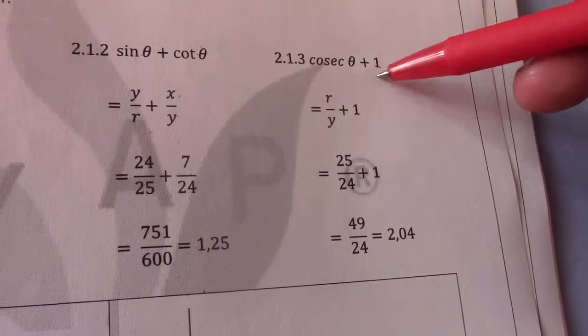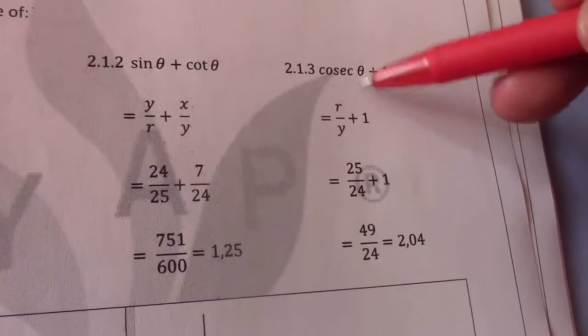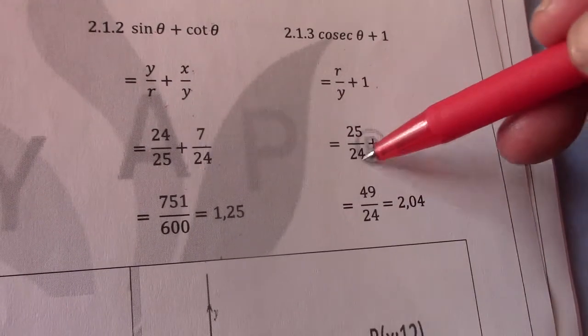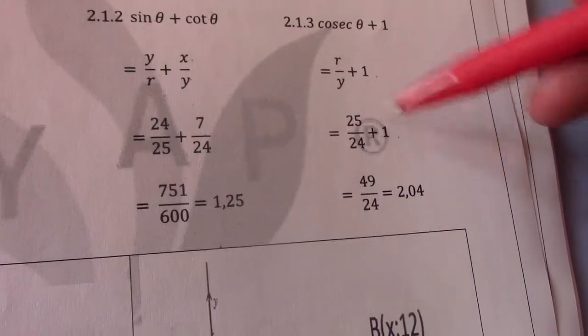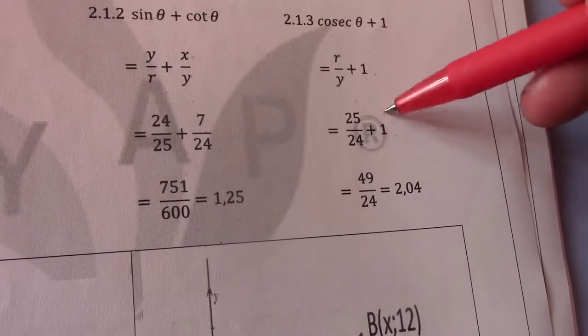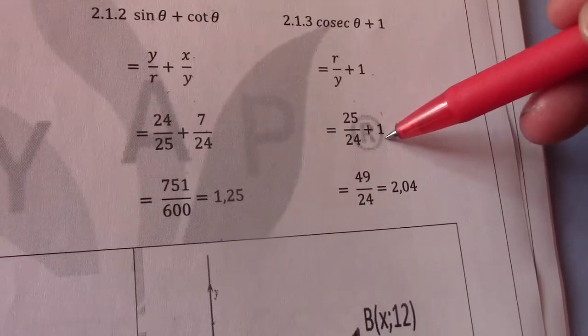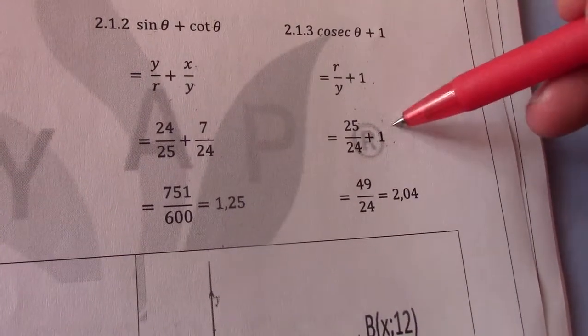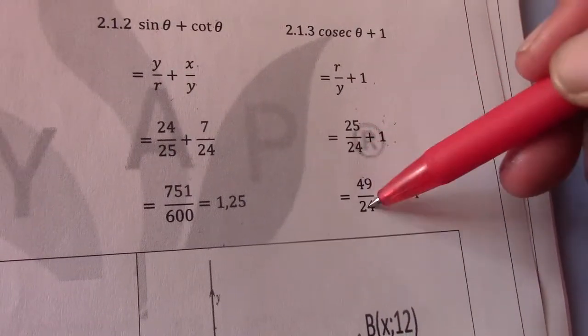The cosec theta I should know is R over Y. It is the reciprocal of sin theta. R over Y plus 1. 25 over 24 plus 1. Now 1 can be expressed as 25 over 25 or 24 over 24. According to the denominator. 25 plus 24 gives me 49 over 24.